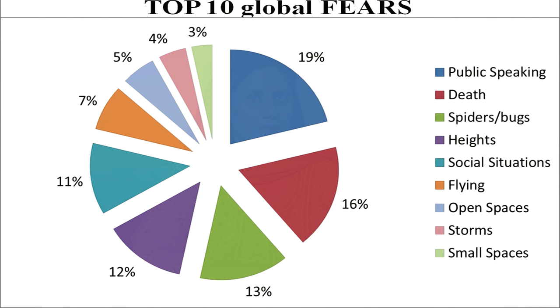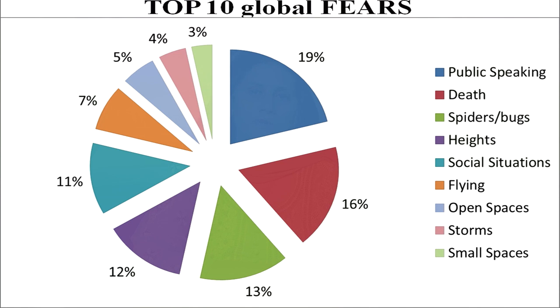Here are the top 10 global fears shown in a pie chart. The maximum global fear is 19%, which is public speaking, followed by 16% for death, 13% from spiders or bugs, 12% from heights, 11% from social situations, 7% from flying, 5% from open spaces, 4% from storms and 3% from small spaces. So the maximum global fear among people — 19% — is public speaking.